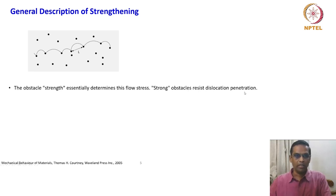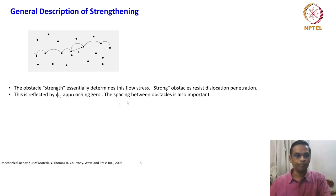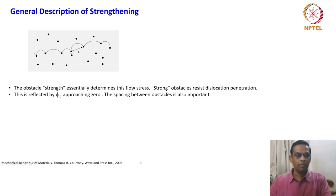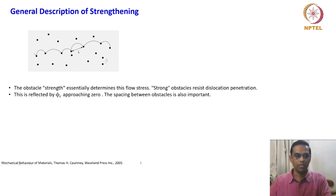Strong obstacles resist dislocation penetration, which is reflected by phi_c approaching 0 — the dislocation lines are trying to extrude between the obstacle particles, and if penetration is completely resisted, phi_c becomes almost 0. The spacing between obstacles is also important, especially in dispersion strengthening or second-phase particle systems. The spacing between the obstacles is a quite important parameter.